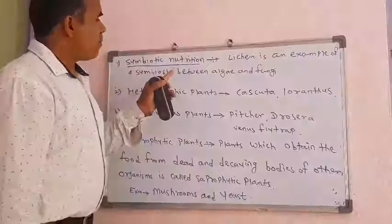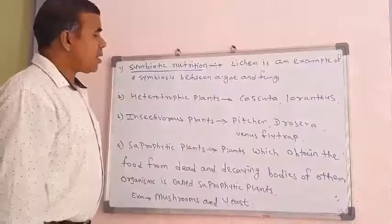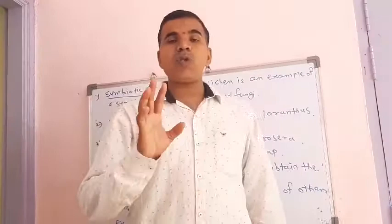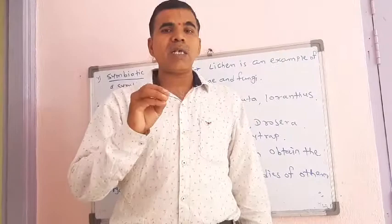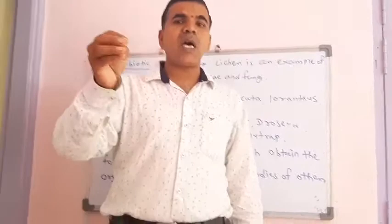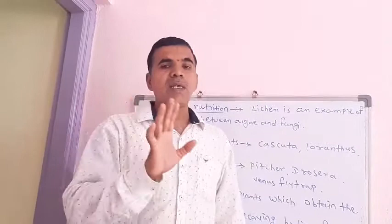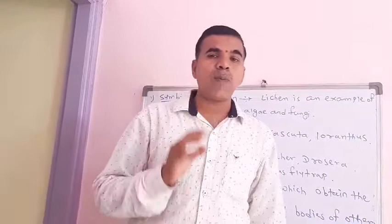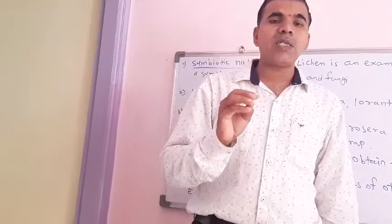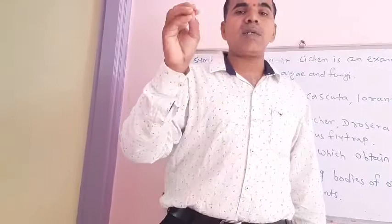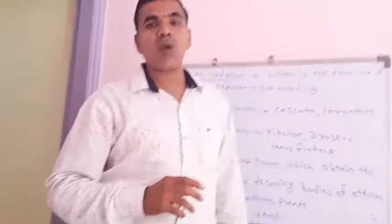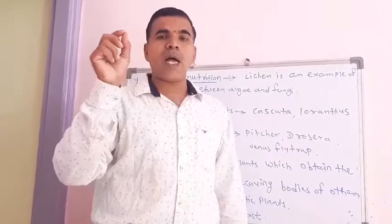Next point: Heterotrophic plants. Heterotrophic plants do not show the photosynthesis process. Those plants which cannot make their own food and grow on another plant's body for food purpose are said to be heterotrophic plants. An example is Cuscuta, a yellow thread-like plant which grows on other trees or plants.